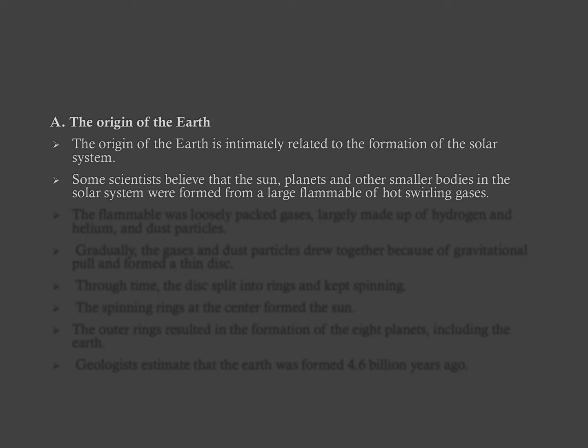The sun, the planets and other smaller bodies which is found in the solar system were formed from a large flammable of hot swirling gases. Swirling means revolving gases.